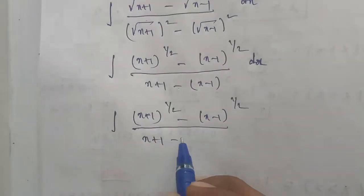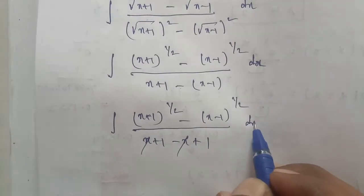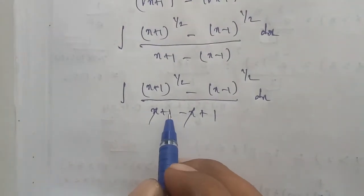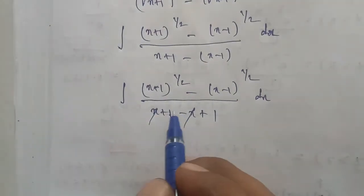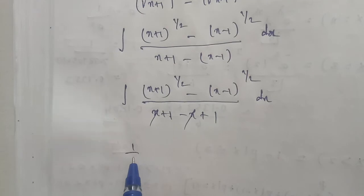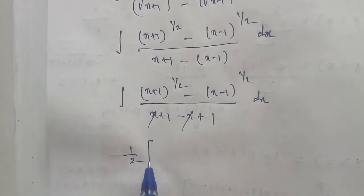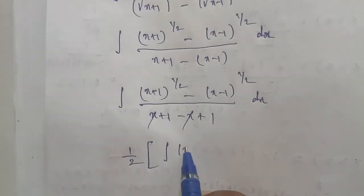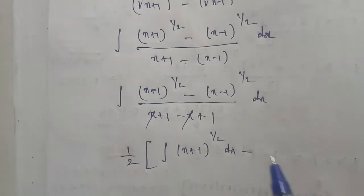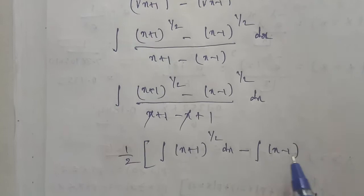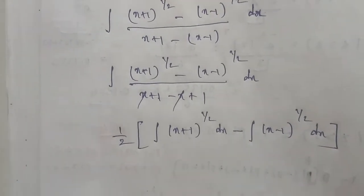In the denominator, X plus 1 minus X minus 1: the X terms cancel, leaving plus 1 and plus 1, so the denominator equals 2. So into dx, the constant 2 comes out. So we get 1 by 2 times the integration of square root of X plus 1 minus square root of X minus 1 into dx. That is, 1 by 2 of integration of X plus 1 whole power of 1 by 2 into dx minus integration of X minus 1 whole power of 1 by 2 into dx.